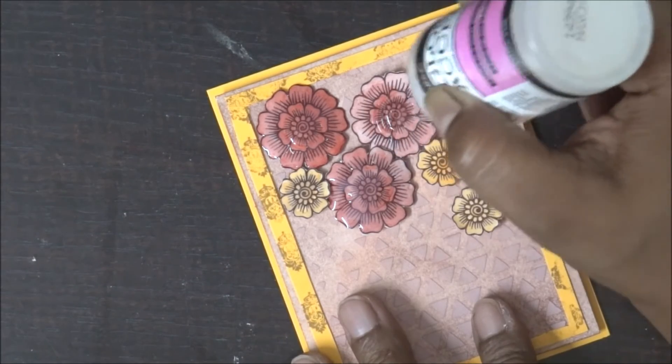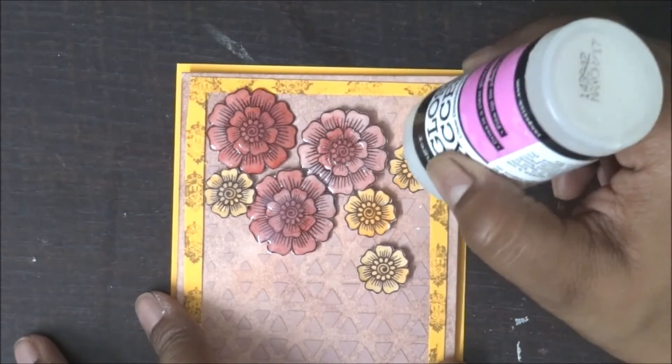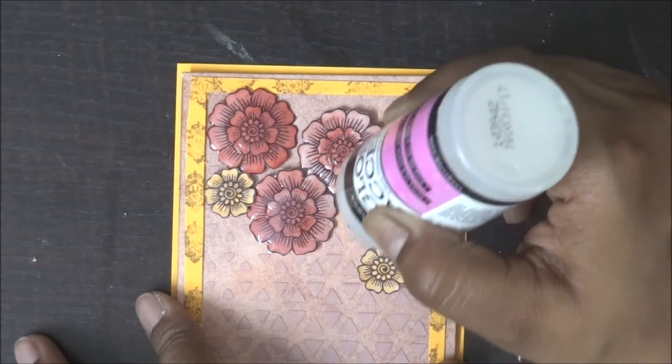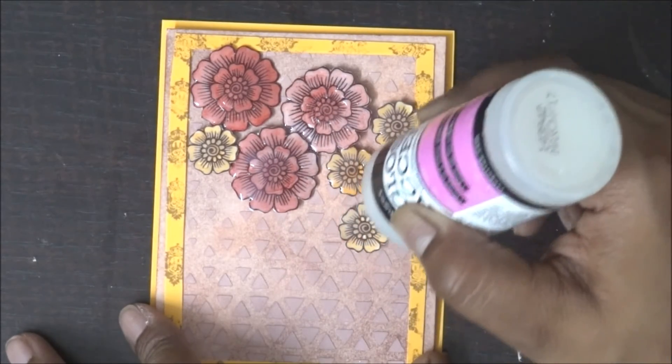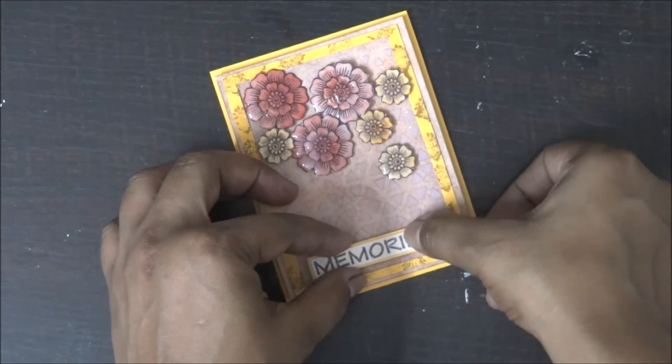So as glossy accent takes a little time to dry out, I'll just do the glossy accent work and then I'm going to stick my sentiment and my card is ready. But I do need to keep it aside to dry. It takes a little more time, but then that's fine. The final outcome of the card will really make you happy.